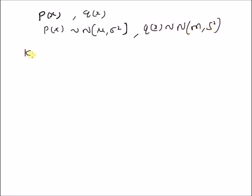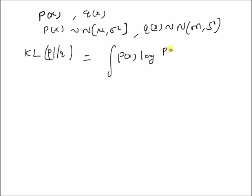So by definition, Kullback-Leibler divergence between the two distributions, denoted as KL of P comma Q, is equal to the integral of P of x times the logarithm of P of x divided by Q of x, dx. This is the definition of Kullback-Leibler divergence between two probability distributions or two PDFs.